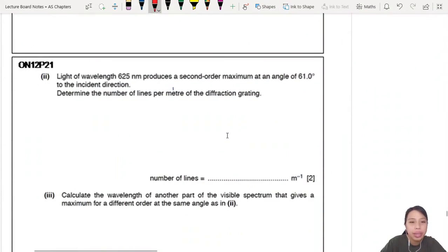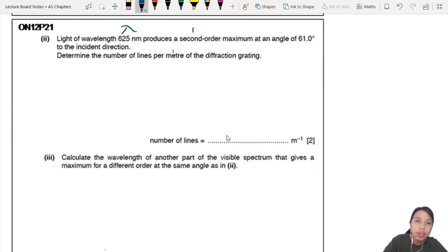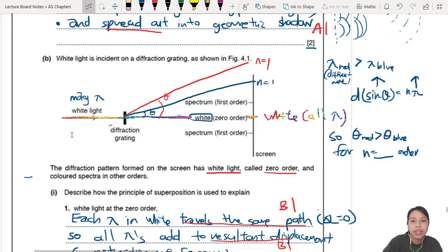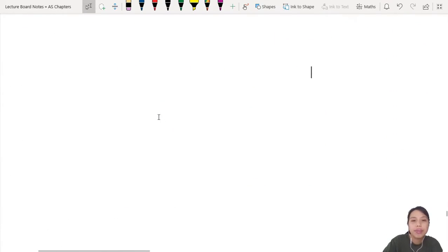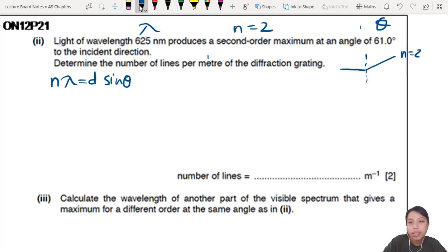Do we continue? Yes we do continue. So now you know they spread out. They ask you to calculate. The light of wavelength produce a second-order maximum at an angle of 61 degrees to the incident direction. So means if you have some light that θ is 61 degrees, then you spread out second-order of one of the wavelengths. So you have N λ equals to D sine θ. If you want a picture, draw. Light come in, spread out. Second-order is an angle of 61 degrees.